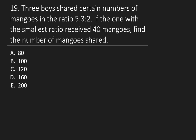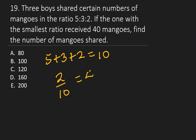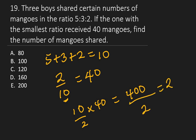Question 19: Three boys shared mangoes in the ratio 5:3:2. The one with the smallest ratio received 40 mangoes. Find the total number of mangoes shared. Total ratio = 5 + 3 + 2 = 10. The smallest share is 2/10 = 40, so the total is (10/2) × 40 = 200. The right answer is E: 200.